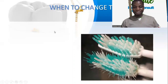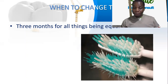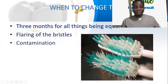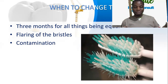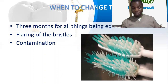When are we supposed to change our toothbrushes? We're supposed to change our toothbrushes ideally every three months, all things being equal. Now if the three months is not even up and your toothbrush flares — you notice the bristles are splaying out — that is an indication for you to change your toothbrush. Also, if it gets contaminated — for example, it falls in the bathroom — you have to change it as well. So either at the three-month mark, when there is flaring, or when there is contamination.